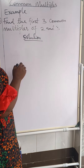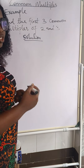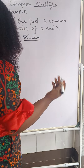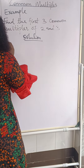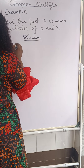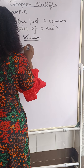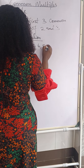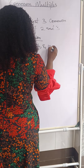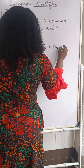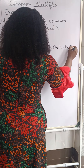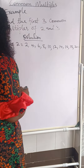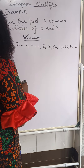Multiples of two is just like counting in twos: two, four, six, eight, ten. So we'll have multiples of two: two, four, six, eight, ten, twelve, fourteen, sixteen, eighteen, twenty, and so on.